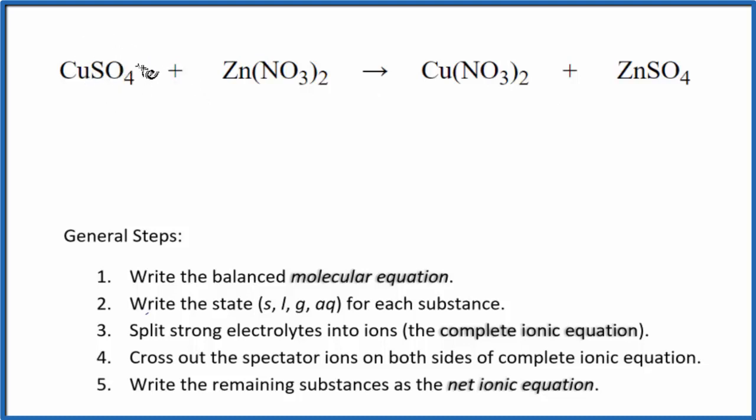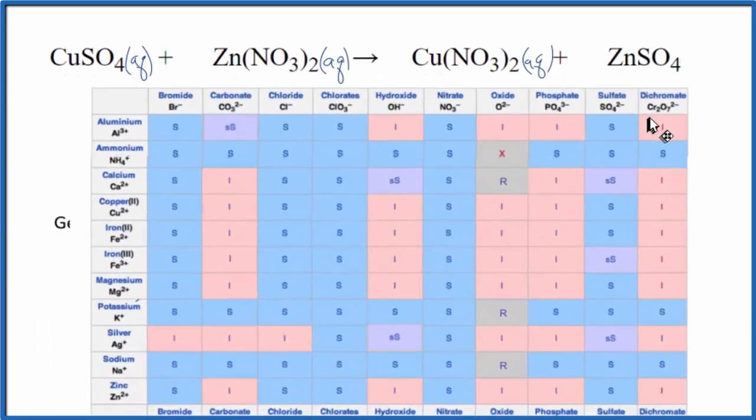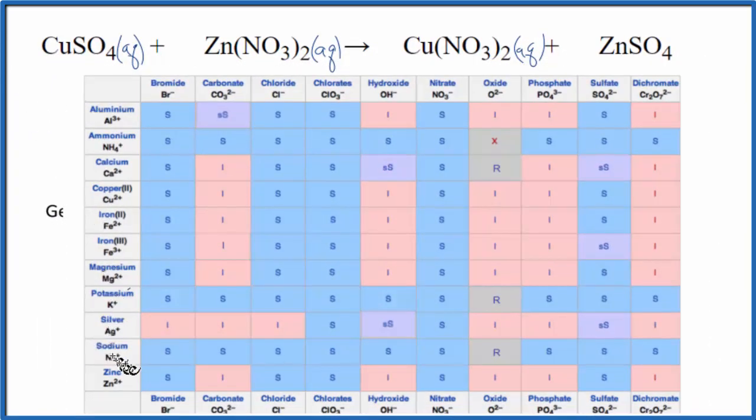Sulfates in general are soluble and copper(II) sulfate is aqueous there. Nitrate is very soluble. We have copper(II) nitrate here. And if you're not sure about zinc sulfate you should look that up on a solubility chart. So on the chart here, zinc and then the sulfate.